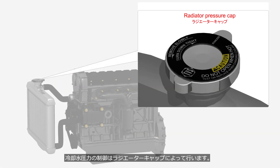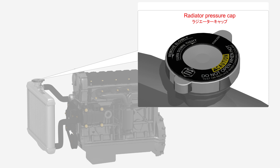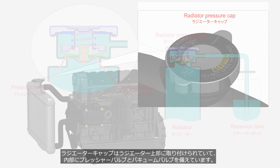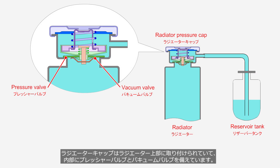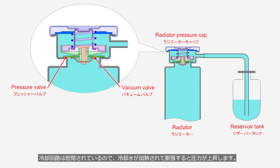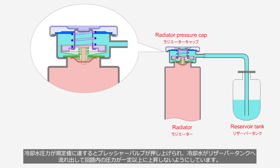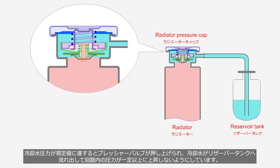The radiator pressure cap controls coolant pressure. It is attached at the top of the radiator and is equipped with a pressure valve and a vacuum valve internally. Because the cooling circuit is sealed, when the coolant heats up and expands, the pressure increases. When the coolant pressure reaches the specified value, the pressure valve is pushed up, allowing the coolant to flow into the reservoir tank, preventing the pressure within the cooling circuit from rising beyond a certain level.